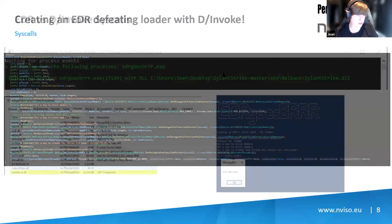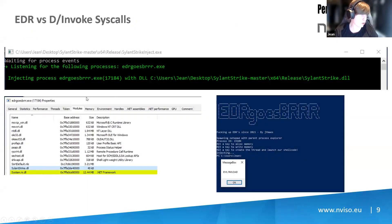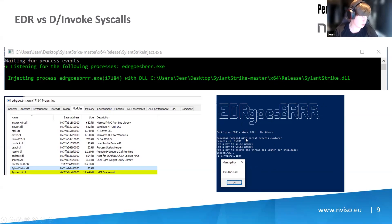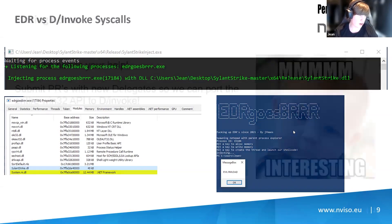Let's take a quick look at how that works. Here you can see I created a proof of concept called EDR Goes Brrr, and what it does is basically use syscalls to evade the EDR and pop that evil payload message box as a proof of concept. So there you go.